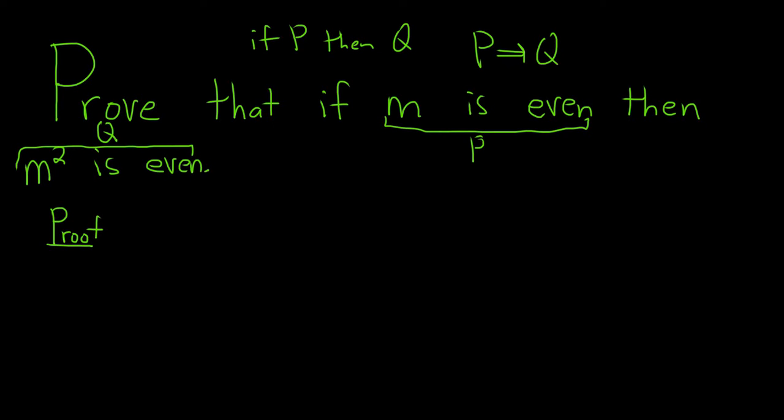In general in mathematics when you have something that says if this is true then this is true, one way to prove it is using something called a direct proof. So you just assume the P part is true then you show the Q part is true.